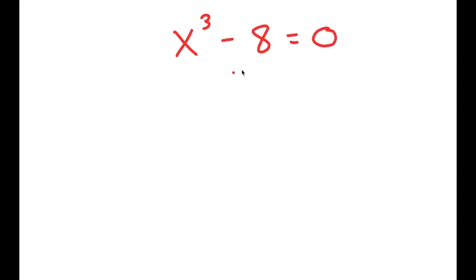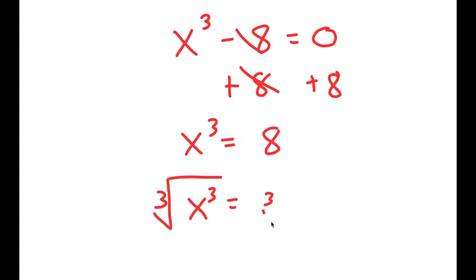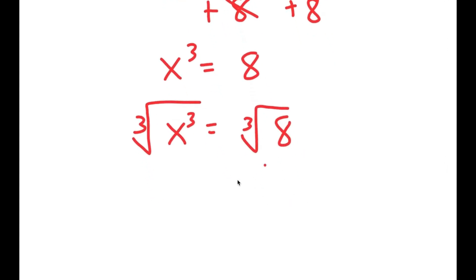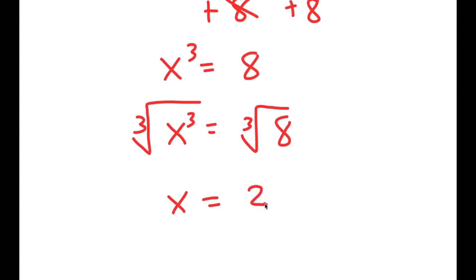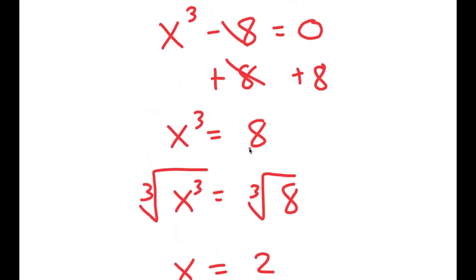So how most people solve this equation is they add 8 on both sides, so they get x to the power of 3 is equal to 8, and then they take the cube root on both sides. The cube root of x to the power of 3 is x, and the cube root of 8 is 2. So they get x equals 2, which is a solution — but actually there are more than one solution to this equation.